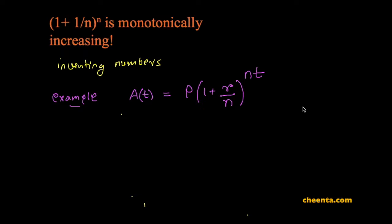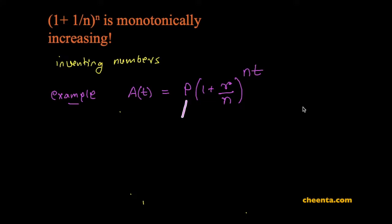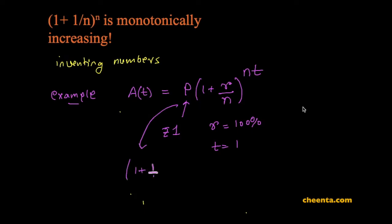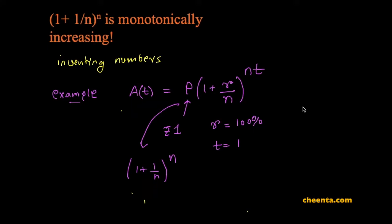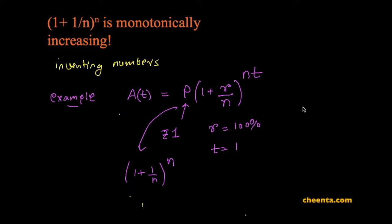Mathematicians took this formula and put one rupee as the investment amount, R equals 100%, and T as one year. The formula then converts into (1 + 1/n)^n. We experimented with some values of this sequence, and if you have not seen the previous video, now would be a great time to go back to it.